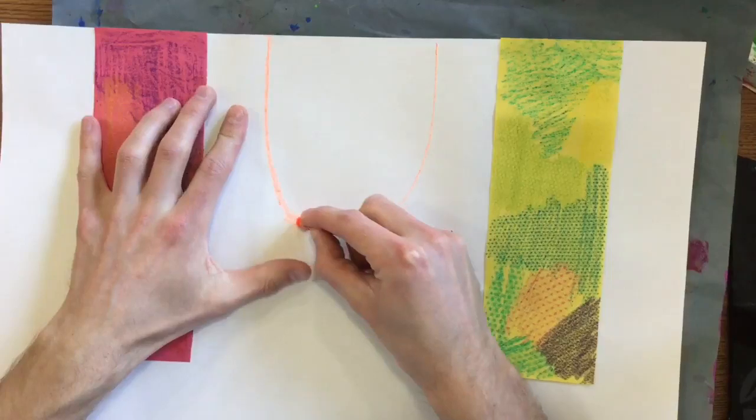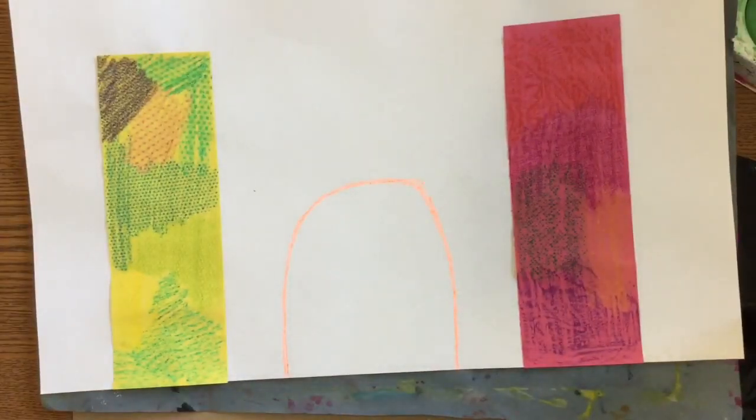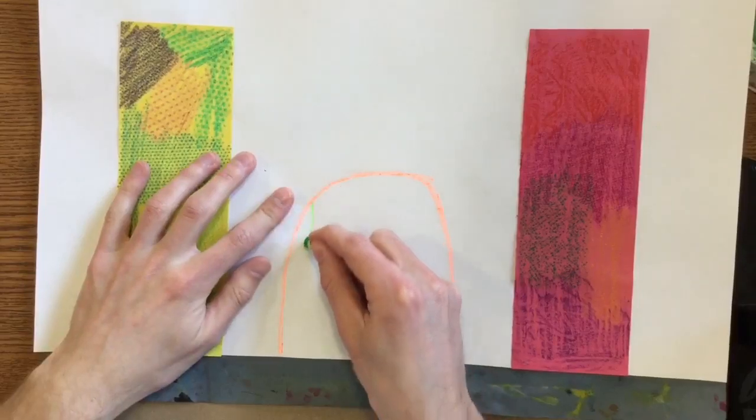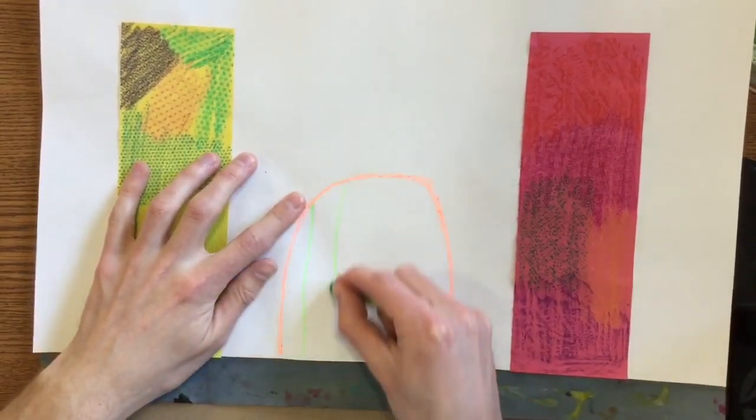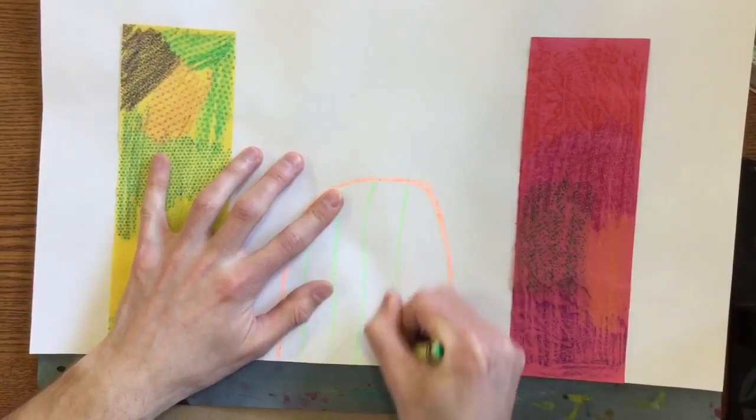All right, so you're gonna be doing this with your crayon. You can use that same color or you can change to a different color. And I'm gonna draw some vertical lines on my door. This kind of makes it look like there are some wooden planks on my castle door.